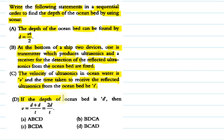Statement D: if the depth of the ocean bed is D, then V equals D plus D upon T, that is equals to 2D upon T. Here four options are given — A, B, C, D — and we have to see which sequential order finds the depth of ocean bed using sonar. What is sonar? Sound, navigation and ranging.